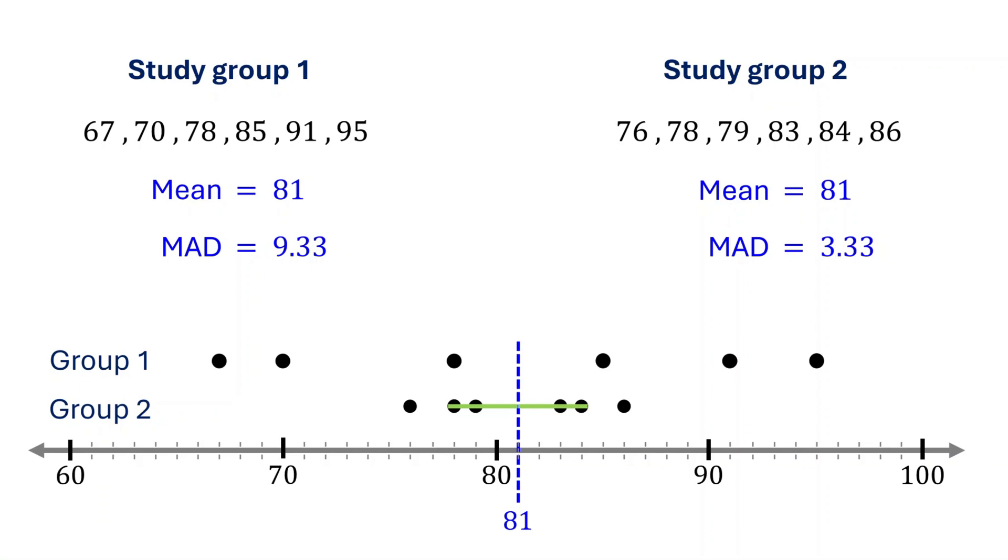In contrast, the first group test scores are much more spread out. On average, the data points are about 9.33 units away from 81. This shows that the mean is a better indicator of the second group's test scores.